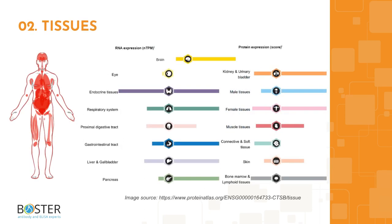Topic 2: Where Is Cathepsin B Expressed? High levels of CTSB have been found in the brain, lungs, GI tract, pancreas, male and female tissues, kidney, and bladder.